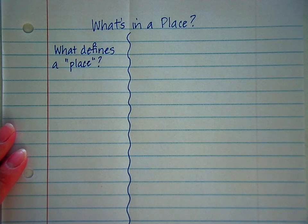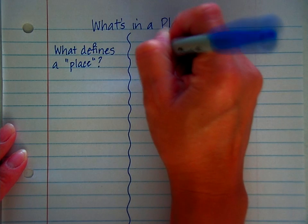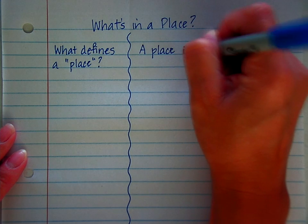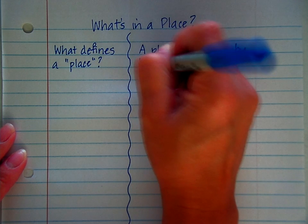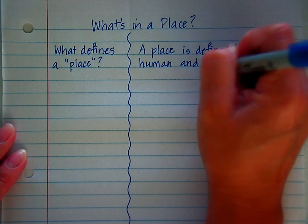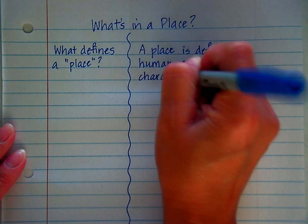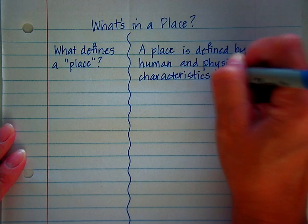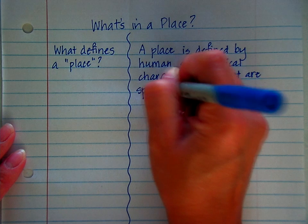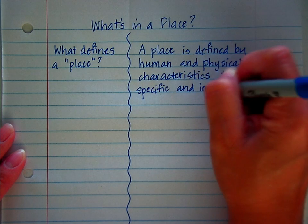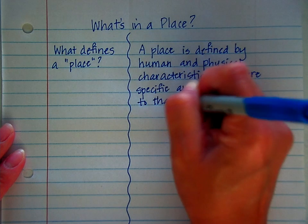A place has multiple meanings, but when we're looking at the five themes of geography, place has a very specific definition. So here it is. A place is defined by human and physical characteristics that are specific and important to that place.